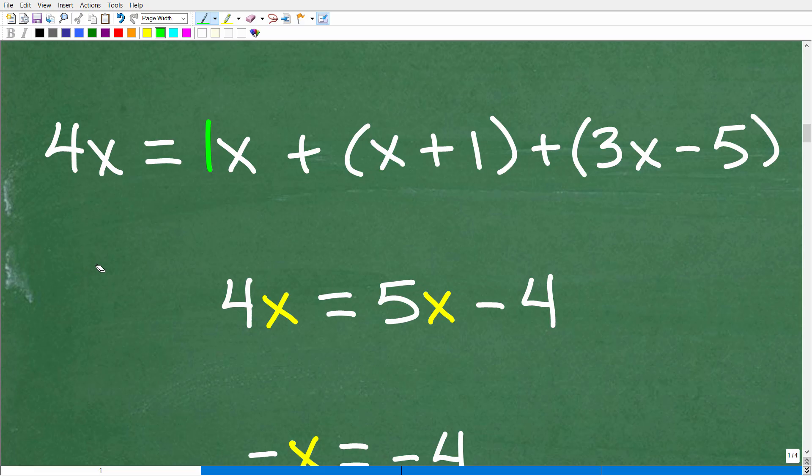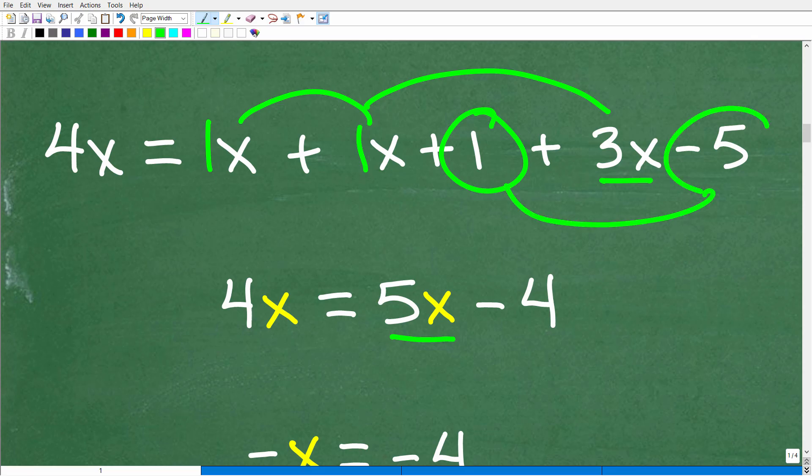So here's 1x here. We can drop these parentheses right here. The parentheses group things together. It's okay for me to drop these parentheses. You've got to be careful when you do drop parentheses because you can have a distributive property situation. But in this case, we're all adding. So I'm just going to drop them so we can focus on combining like terms and numbers. So we have a 1x here, a 1x here, and a 3x here. 1x plus 1x plus 3x is a total of 5x. And then we have a positive 1 plus a negative 5. That gives me a negative 4. And then on the left-hand side, we just simply have a 4x. So now we have 4x is equal to 5x minus 4.